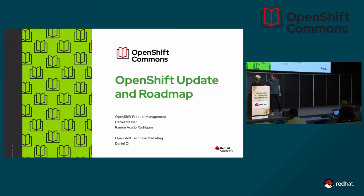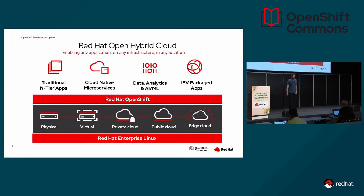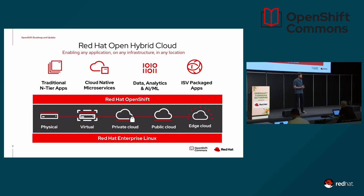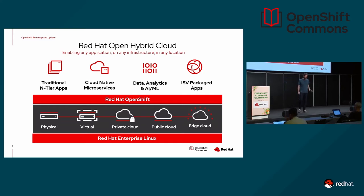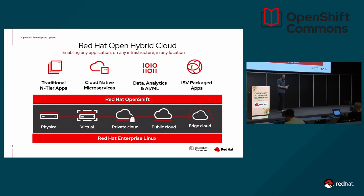Let's talk about the hybrid cloud to start with, which is very related to everything we do with Kubernetes and OpenShift. For the past ten years or so at Red Hat, we've been investing a lot in hybrid cloud. Our customers and users have also been innovating with their apps — from traditional n-tier applications to more cloud-native types — across all our footprints: physical bare metal, virtual machines, private cloud like OpenStack, public clouds, and Edge cloud.